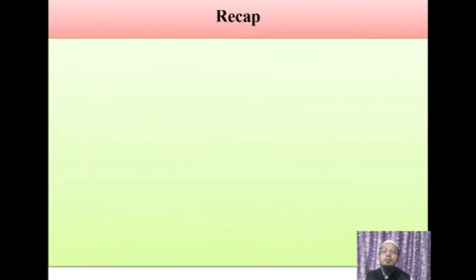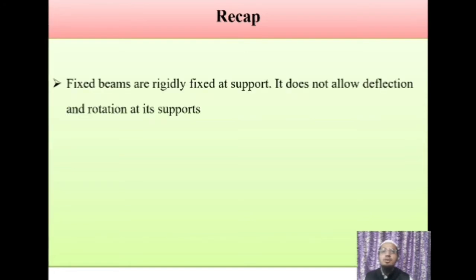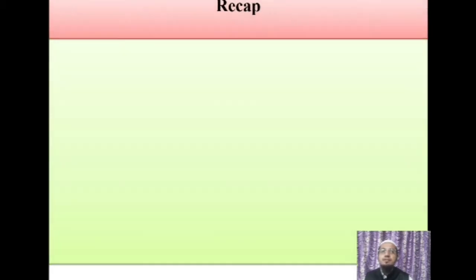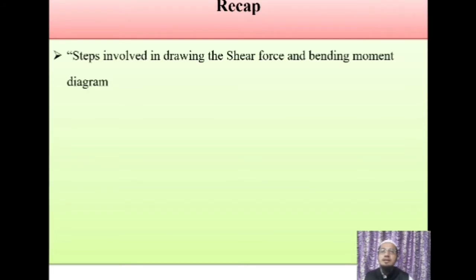Let's have a recap of what we have learned in the previous session. We have discussed that fixed beams are rigid at their supports and due to this fixity, it does not allow any deflection and rotation at its supports. Fixed beams are statically indeterminate structures and due to the fixity, there will be generation of fixed-end moments and hence the indeterminacy is 2 for vertical loading conditions. We also discussed steps involved in drawing the shear force and bending moment diagram.